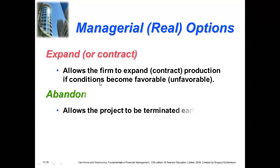The next option is abandon, which allows the project to be terminated early. Early termination means you stop the project at a chosen point — it could be at the start, after the first year of running, or in the second year. Wherever you decide to stop the project, you no longer need to continue calculating returns for that project.